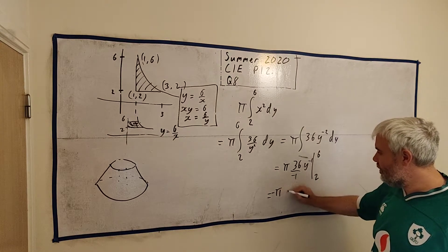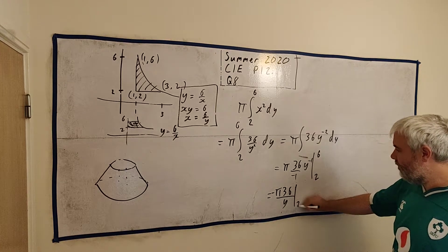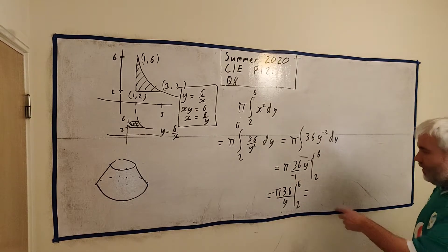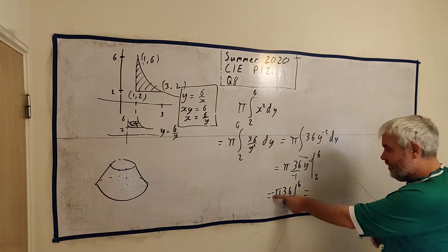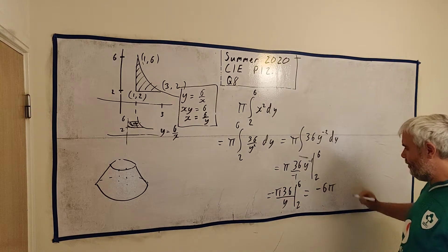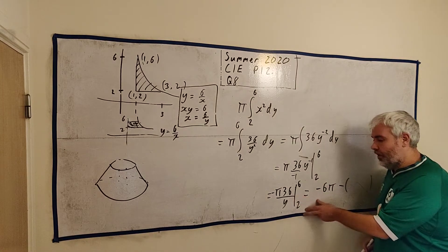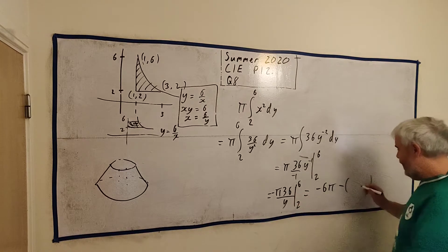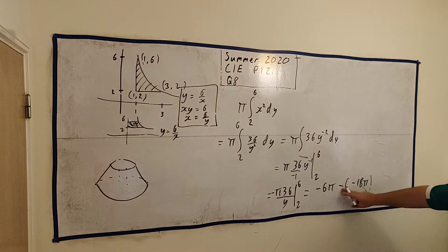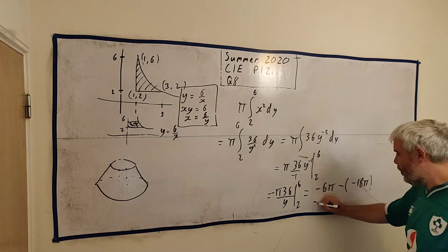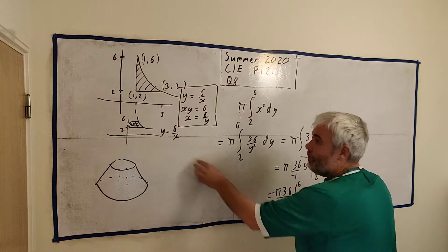We evaluate this between two and six. Let's clean this up. π minus π 36 divided by y. Evaluate between two and six. Let's put six in first. 36 divided by six is six. So we have minus six π. And then we take away whatever happens when the two goes in. 36 divided by two is 18 times π times a minus. And minus minus makes a plus. So this becomes 12π.